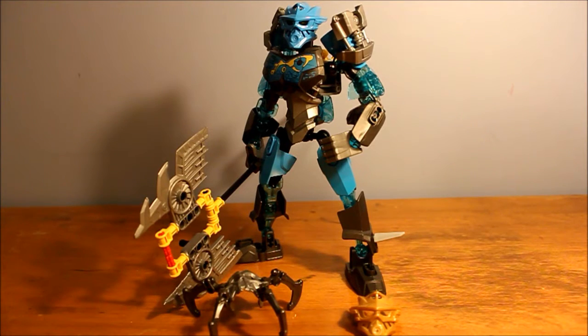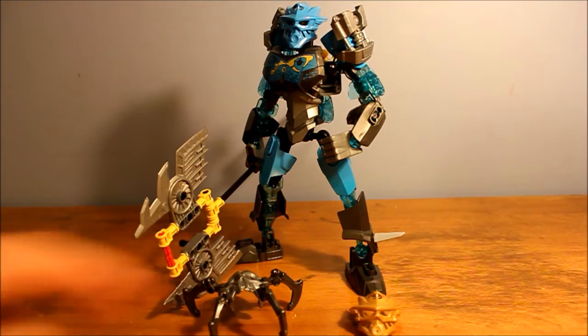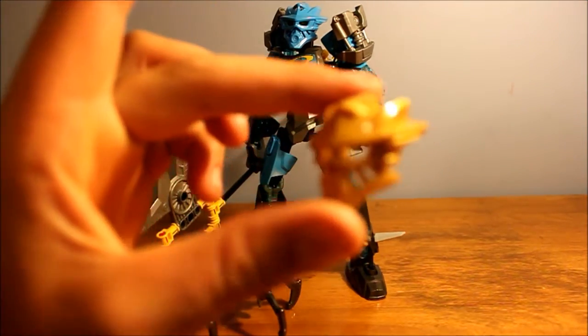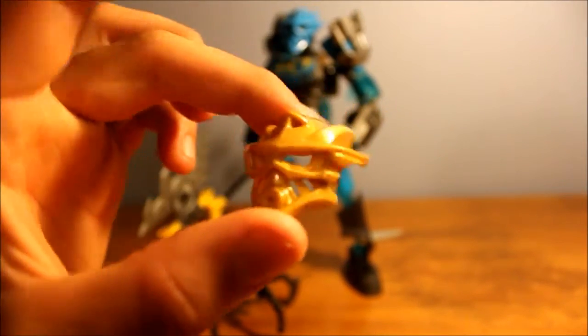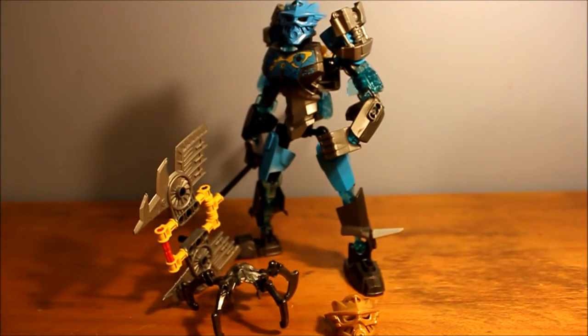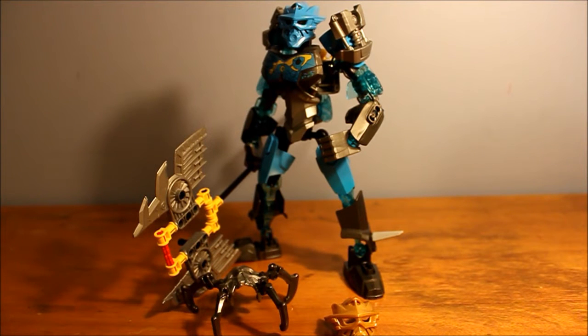So, here's Gali in her 2015 incarnation. And her Skull Spider and her Golden Mask, which I always love the inclusion of the Golden Mask. It's just a nice touch, always, because back in 2001, when you got the Golden Masks, you had to hunt for them in blind boxed mask packs. And that was a pain in the keister.